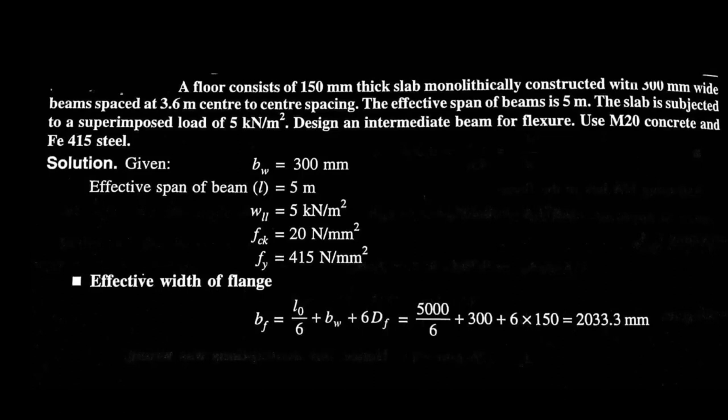Okay, so first of all let's check which data is given in question. BW, width of web, is 300 mm. That is given. Effective span of beam, that is L, is 5 meter. Now live load, or superimposed load, is 5 kN per meter square.